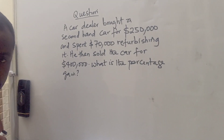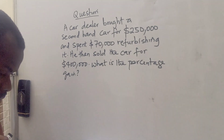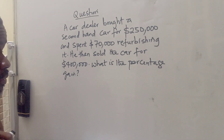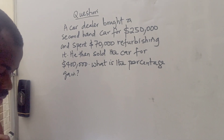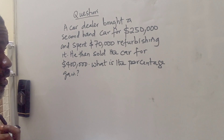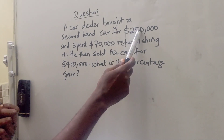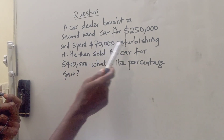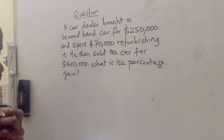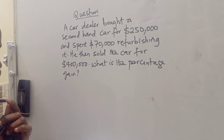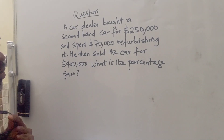Hello everyone, welcome to Smart Meph, the ultimate YouTube channel where all math problems are solved step by step. Today we have a word problem on the board and we are going to get right into the video. The question says: a car dealer bought a second-hand car for $250,000 and spent $70,000 refurbishing it. He then sold the car for $400,000. What is the percentage gain?